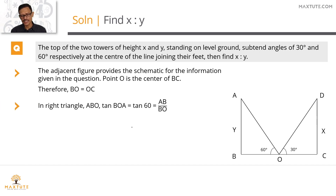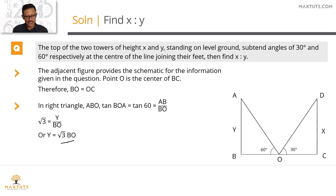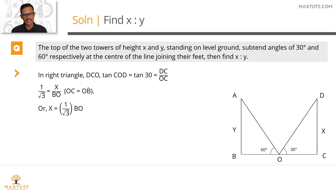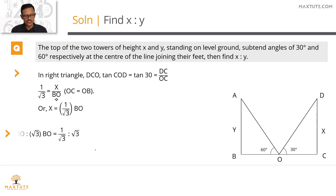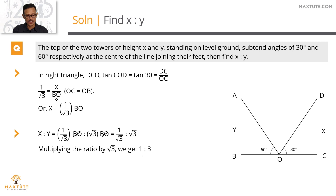Summary: In triangle ABO, tan 60° = AB/BO, so y = √3·BO. In triangle DCO, tan 30° = DC/OC = x/BO, so x = (1/√3)BO. Therefore x : y = (1/√3)BO : √3·BO. After cancelling BO, ratio is 1/√3 : √3, or equivalently 1 : 3.